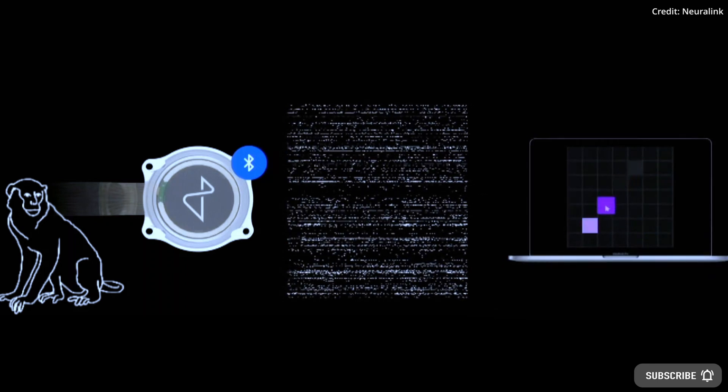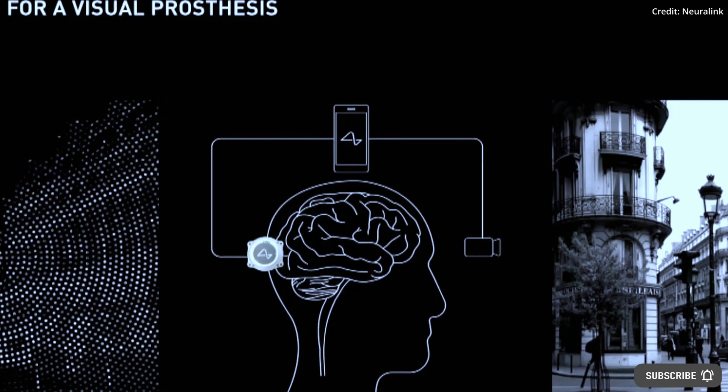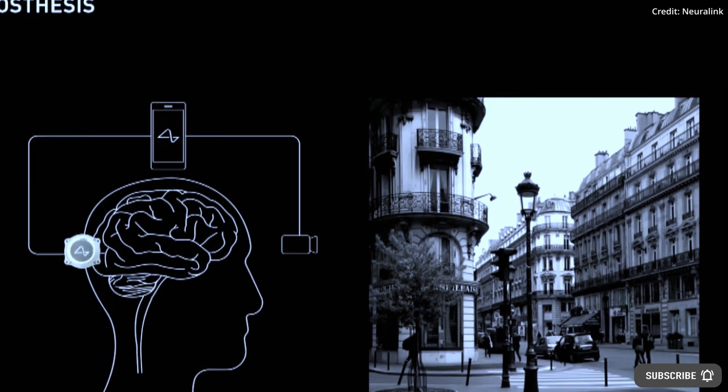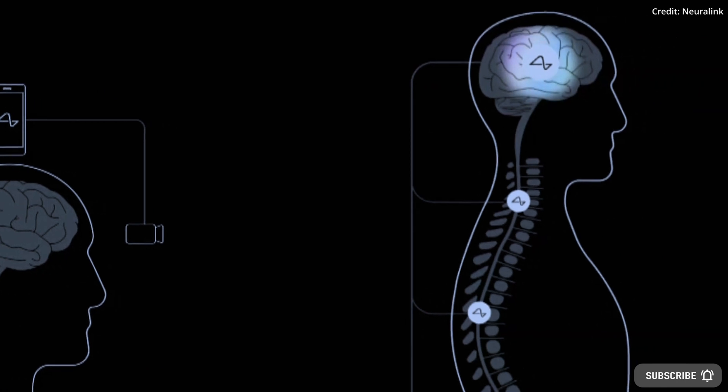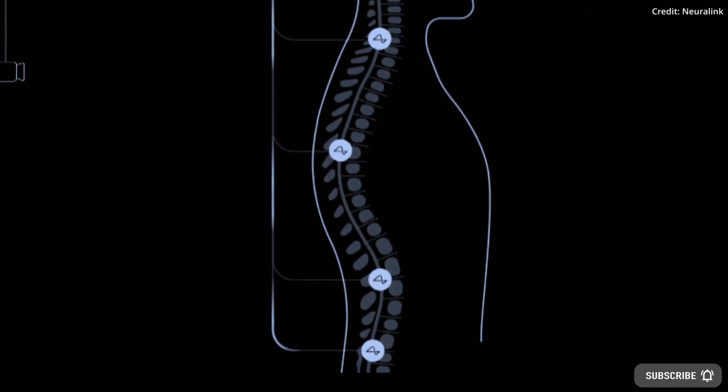In terms of Neuralink's application, Musk says that Neuralink can restore vision, even for someone who was born blind, and the company also believes that the Neuralink device will be able to provide full movement for quadriplegics by stimulating nerves throughout the spinal cord.